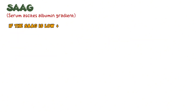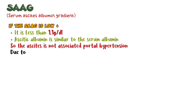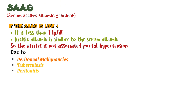If the SAAG is low — meaning less than 1.1 gram per deciliter — the ascitic albumin is similar to the serum albumin, indicating that the ascites is not associated with portal hypertension. It can then be due to peritoneal malignancies, tuberculosis, or peritonitis, but most commonly it is due to peritoneal malignancies.